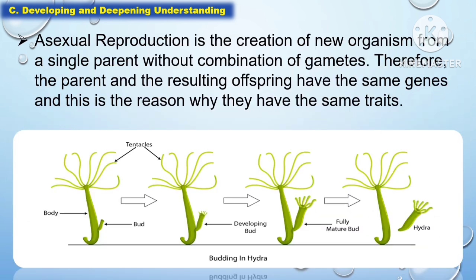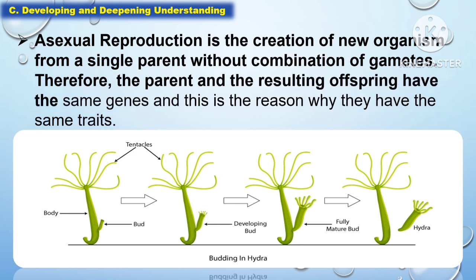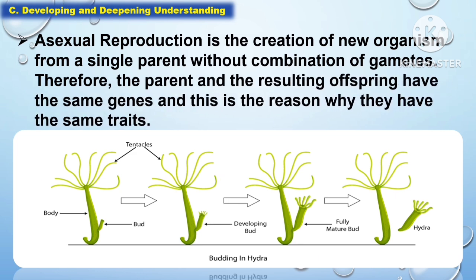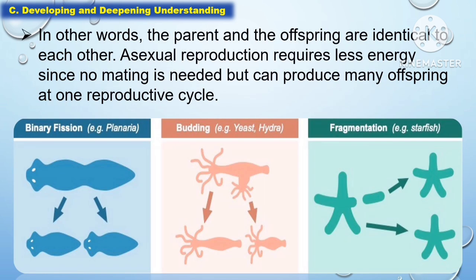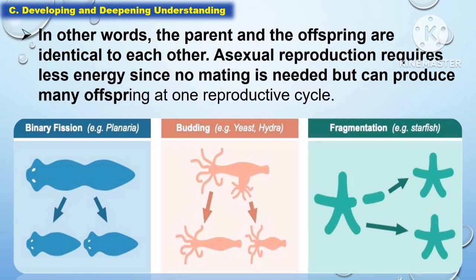Asexual reproduction is the creation of a new organism from a single parent without combination of gametes. Therefore, the parent and the resulting offspring have the same genes, and this is the reason why they have the same traits. In other words, the parent and the offspring are identical to each other. Asexual reproduction requires less energy since no mating is needed, but can produce many offspring in one reproductive cycle.